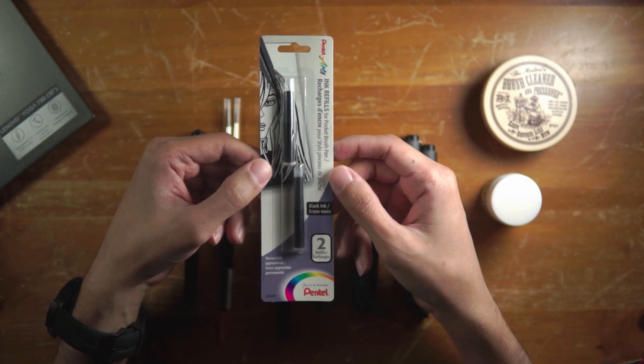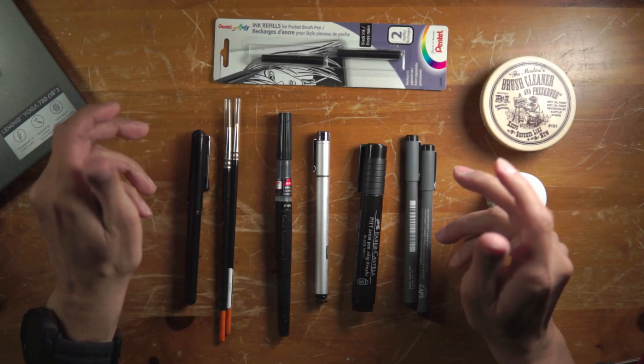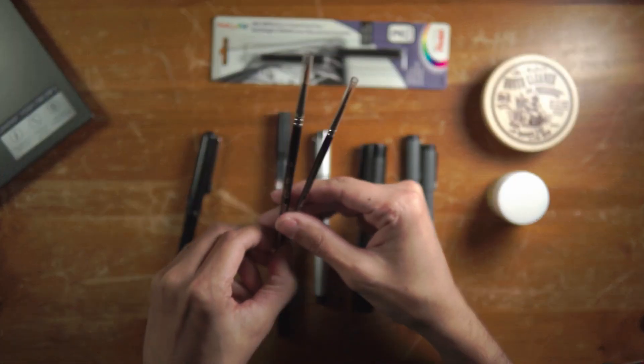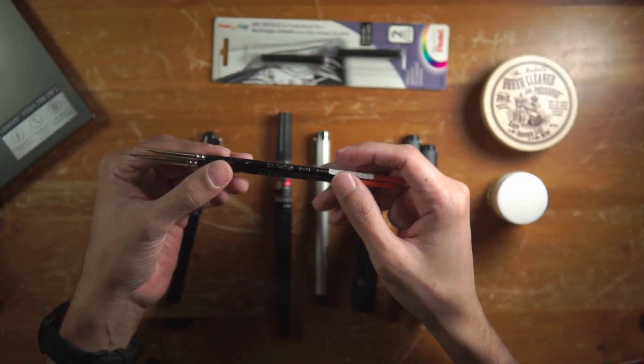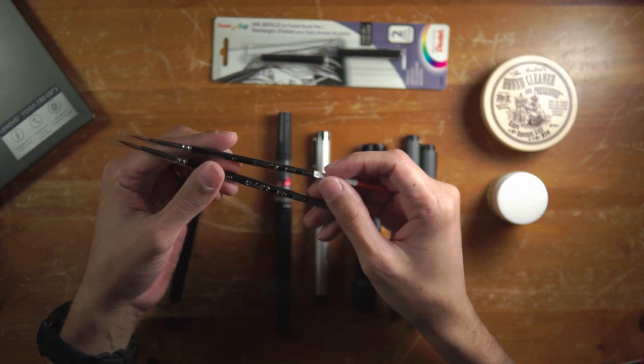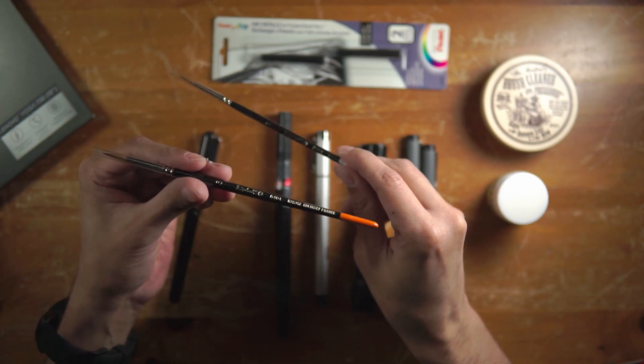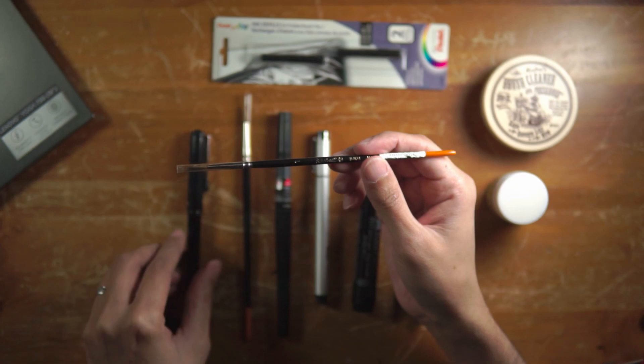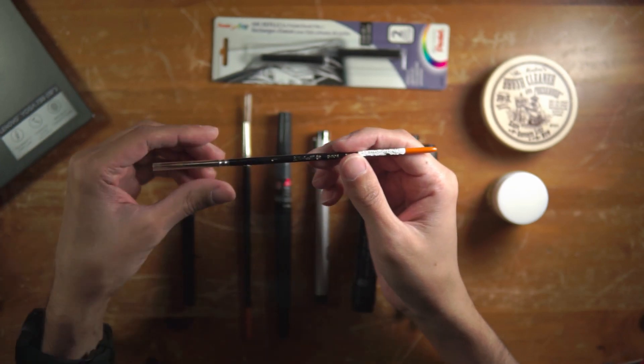My secondary main tool would have to be the Rafael Kalinsky brushes. These two that I use are series 8404, and this is a number one and a number three. Now the number one I mainly use exactly like I use the Pentel pocket pen.